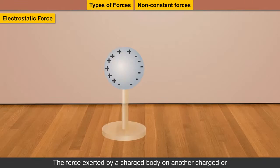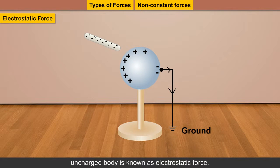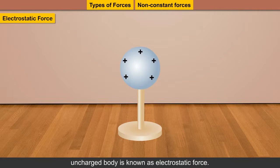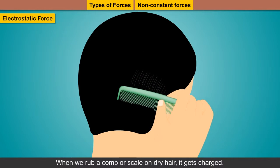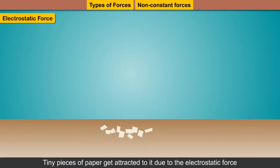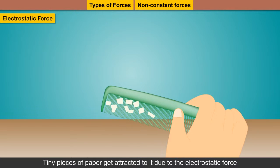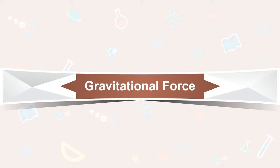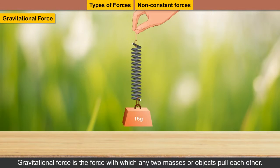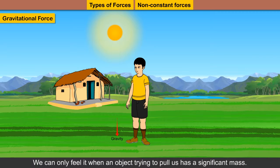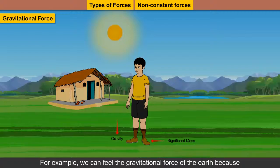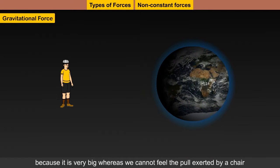Electrostatic force: The force exerted by a charged body on another charged or uncharged body is known as electrostatic force. Charges can attract or repel each other like magnets. When we rub a comb or scale on dry hair, it gets charged. Tiny pieces of paper get attracted to it due to the electrostatic force exerted by the comb or scale, without touching the pieces of paper. For example, we can feel the gravitational force of the earth because it is very big.